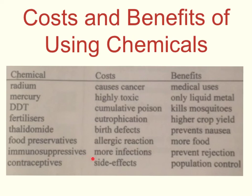Immunosuppressive drugs are vital for organ transplant recipients — exactly as the title implies, they suppress the immune system. When someone has an organ transplant, they're receiving an organ from another person, and the body's immune system will recognise it as foreign and fight it off. Immunosuppressives prevent the rejection of the new organ, which is what we want. The problem is that the patient's immune system is suppressed, making them much more prone to infections and illness.